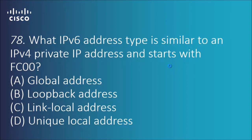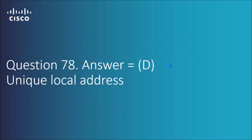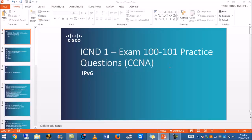Question 78: what IPv6 address type is similar to an IPv4 private IP address and starts with FC00? Link-local was covered earlier, loopback is the double colon with a one, and the global address starts with 2000. The answer is D — unique local address. This is similar to what an IPv4 private address would be, and it starts with FC00.